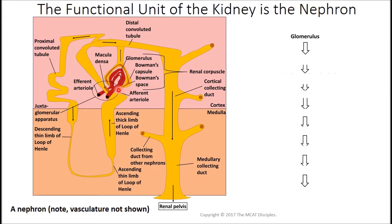Blood is filtered at the glomerulus and passes into the proximal convoluted tubule. Eventually it reaches the loop of Henle — with the descending limb and ascending limb — then a structure called the macula densa, important in autoregulating the kidney. Then the distal convoluted tubule, followed by the collecting duct, which can be broken into cortical and medullary collecting duct. After the collecting duct, fluid empties into the calyces, then the renal pelvis, into the ureter, into the bladder, and out through the urethra.